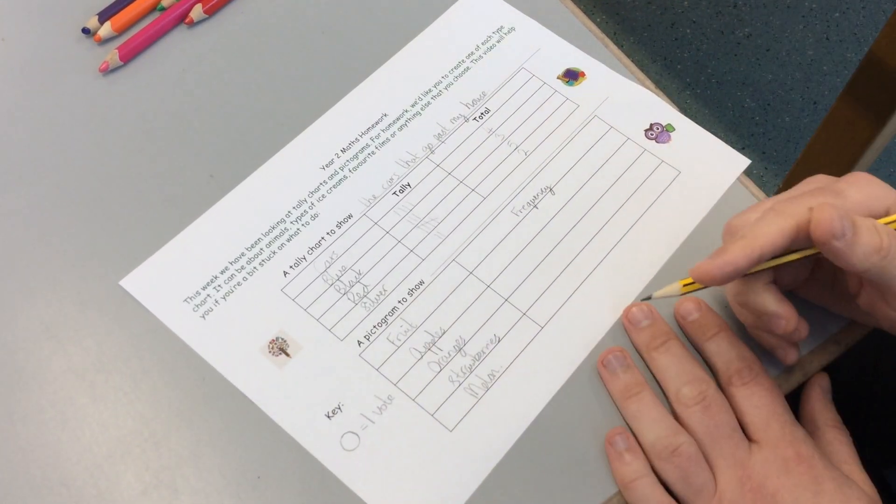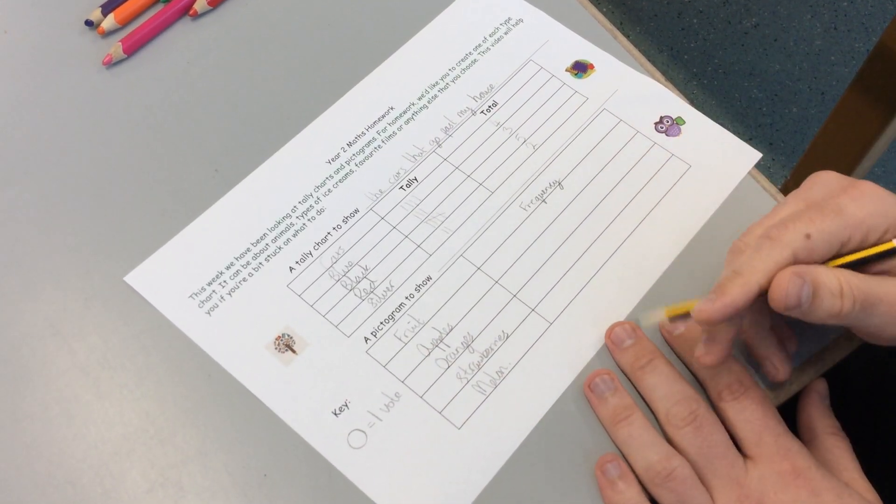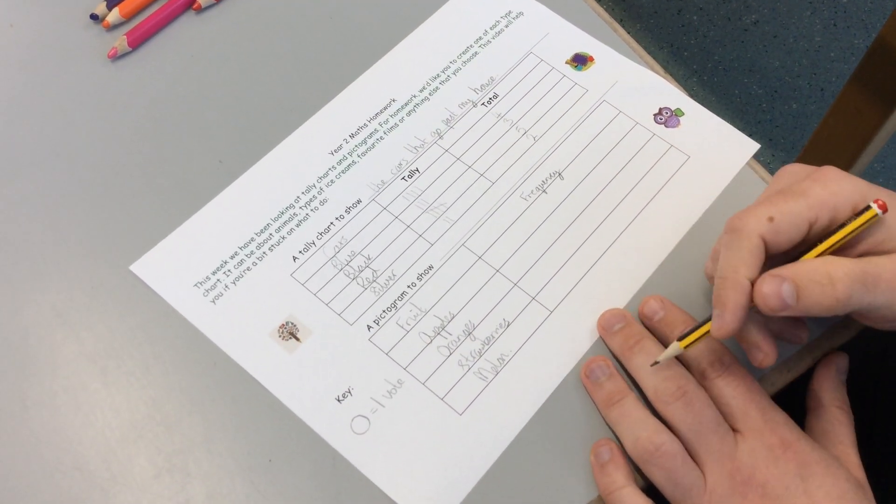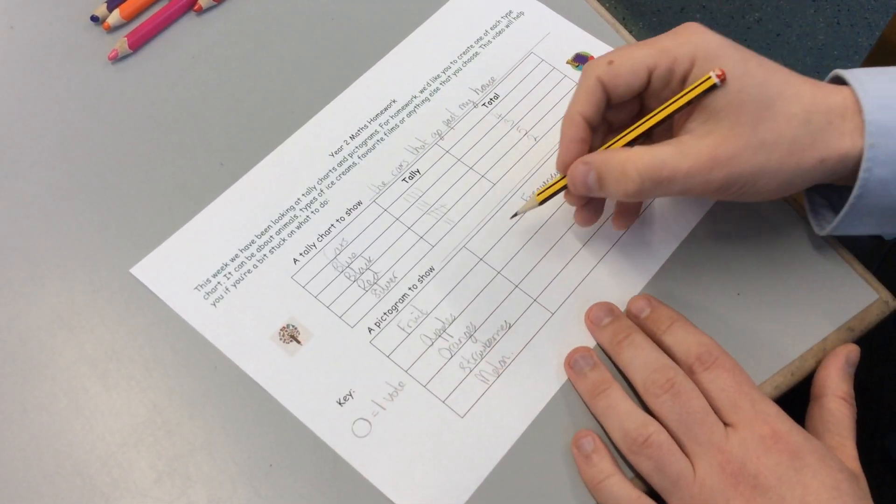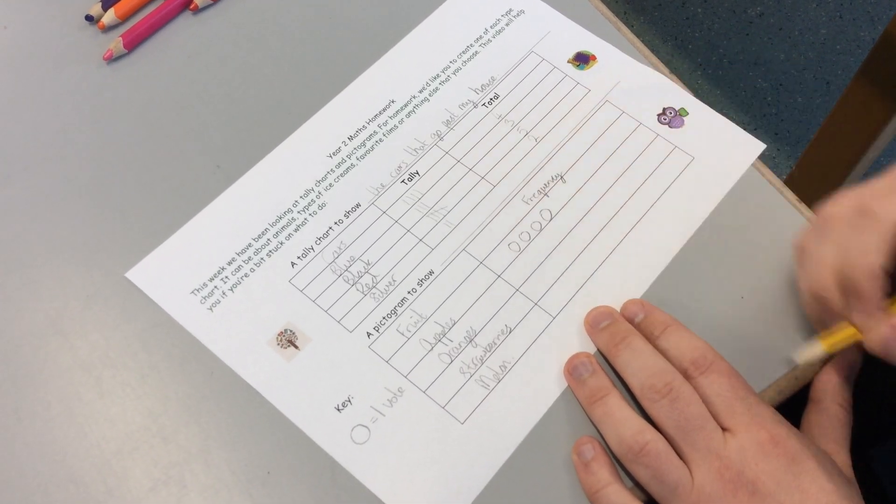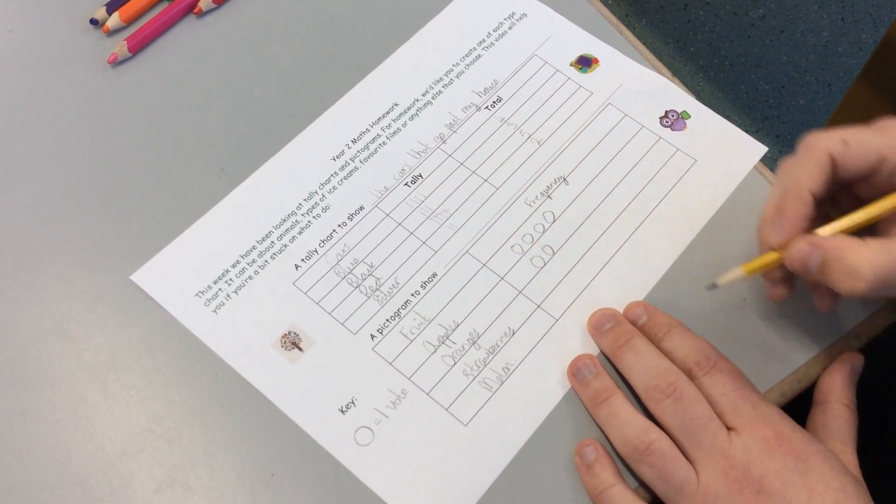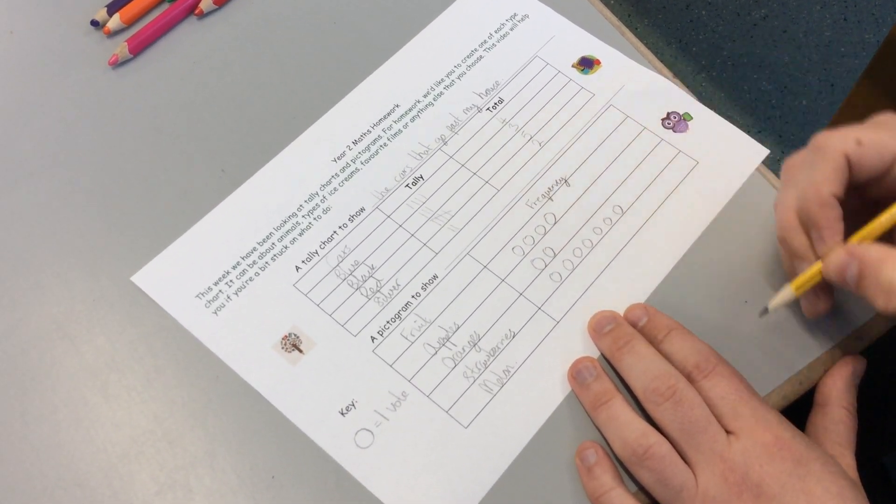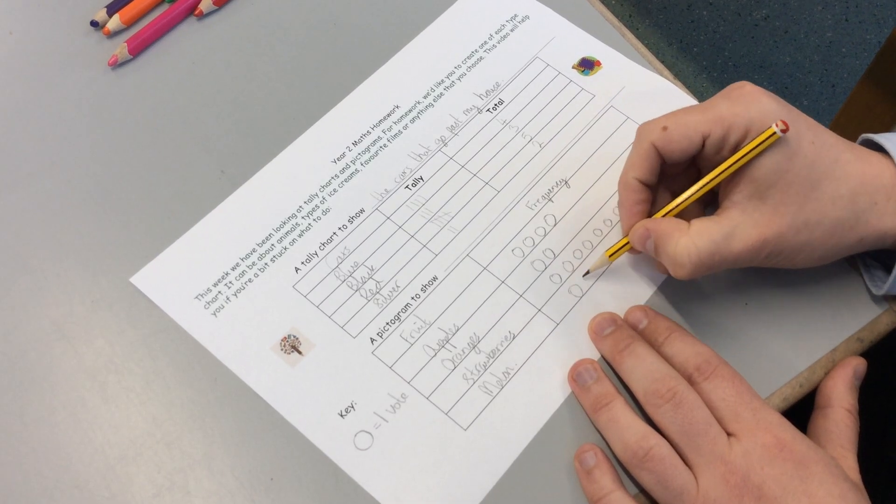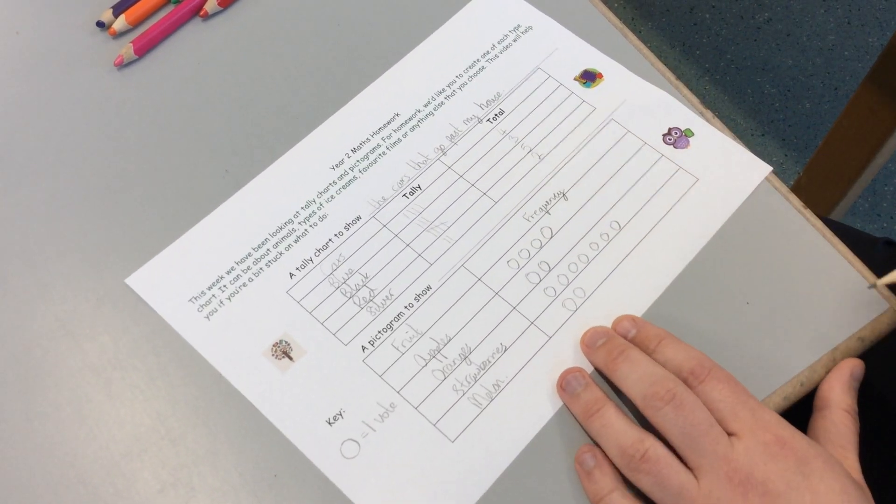So I need to ask the people in my family. That's my sisters. I'd ask Niamh. I'd find out. Maybe ask the next door neighbors. And find out what they like. So just pretend here I've got one, two, three, four people have said they like apples. Two people said they liked oranges. Strawberries were really popular. Loads of my family like that. And melon was level with oranges. And there's my frequency.